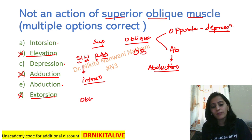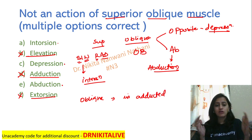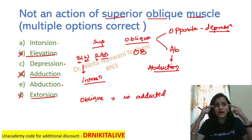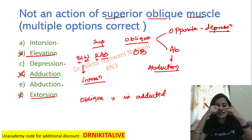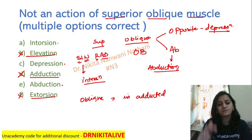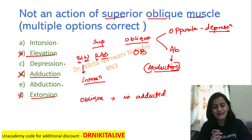Remember that the oblique muscles cause elevation or depression in the adducted position. So when we say superior oblique causes depression in the adducted position, that means when you ask someone to look towards the nose, it is depression and adduction — that is superior oblique. But by itself, superior oblique causes abduction.